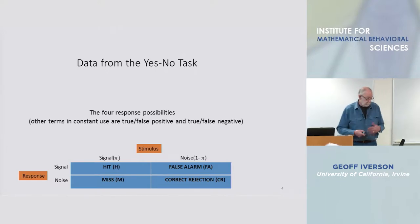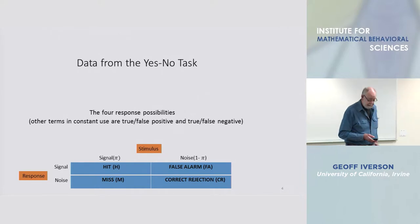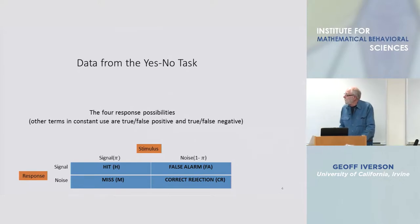The responses again are of two categories and I've just labeled them here again signal and noise, and there are four stimulus response categories.